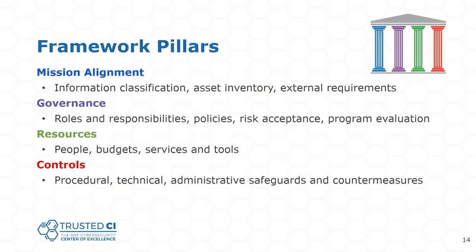The four pillars are: mission alignment — which includes information classification, asset inventory, and external requirements; governance — a big one, covering roles and responsibilities, policies, risk acceptance, and program evaluation; resources — people, budgets, services, and tools; and finally controls — the thing that a lot of frameworks emphasize.